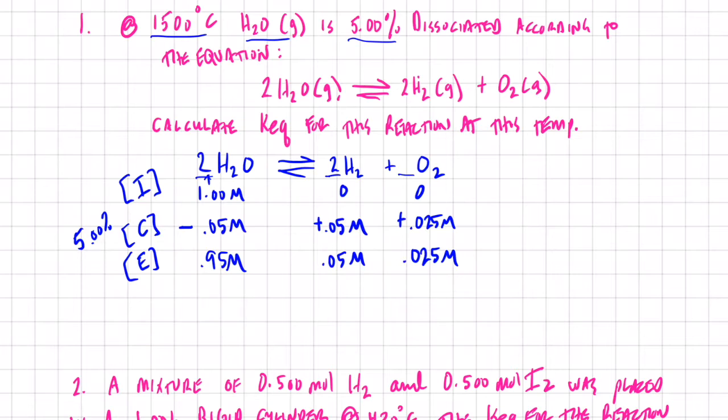Let's write our equilibrium expression for this reaction. Keq equals hydrogen gas concentration at equilibrium squared times the oxygen gas concentration at equilibrium divided by the water vapor at equilibrium squared. So let's plug some numbers in there.